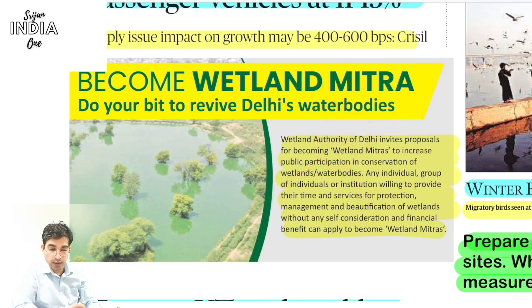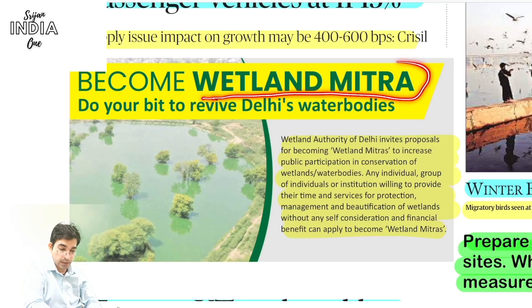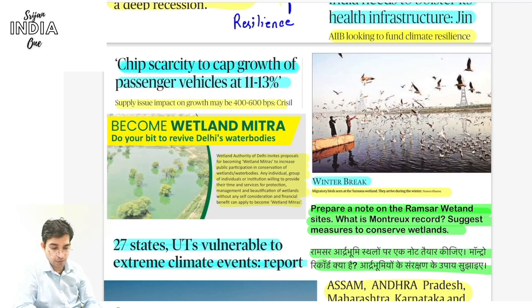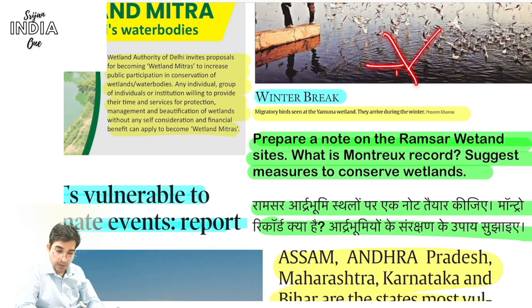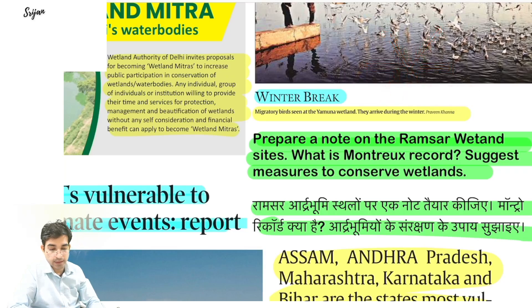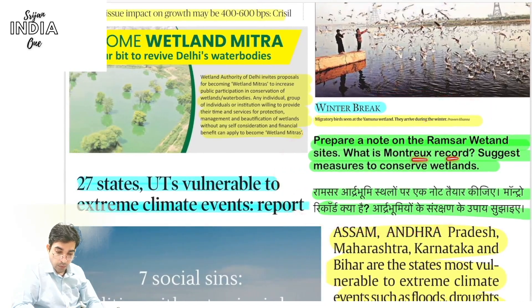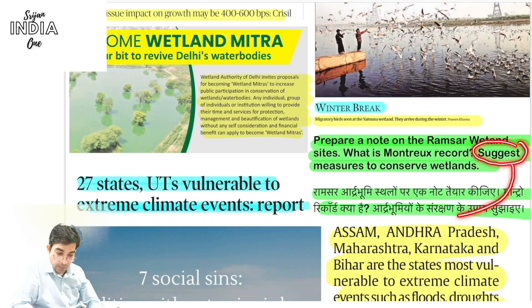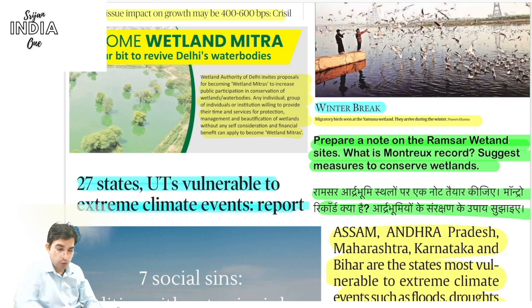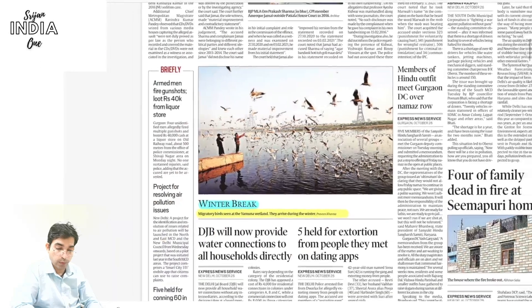The utility of such schemes in answer writing: cite Delhi government's Wetland Mitra as an example showing you know how government works — both theoretical concepts and execution. A question to prepare: prepare a note on Ramsar Convention and suggest measures to conserve wetlands. When a question asks for suggestions, show your thinking — present examples like Wetland Mitra, propose your own scheme. This is how you score very good marks in General Studies — using real examples as templates. The more templates you have, the better answers you can assemble in the actual exam.